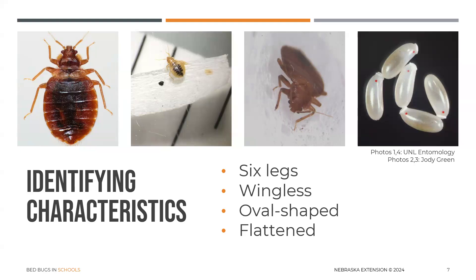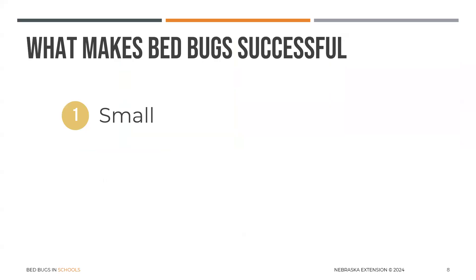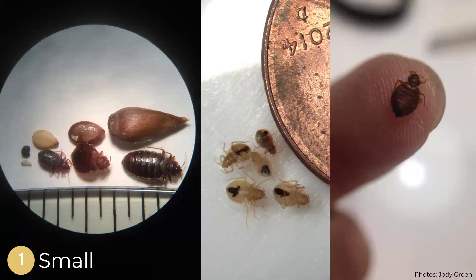Those are their eggs — they're not round, they're elongated, and that little red dot is their eye. When you can see an egg like that, it means it's a viable egg with a tiny immature bed bug developing inside. Bed bugs are successful because they are small, but they are visible at all stages of life to the naked eye. We've compared different bed bug stages to different types of seeds: poppy seed, sesame seed, flax seed, and apple seed. Adult bed bugs are often referred to as the size of an apple seed.